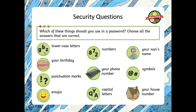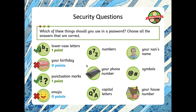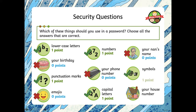Should you use lowercase letters? Yes, you should. Should you use your birthday? No. Should you use punctuation marks? Yes. Should you use emojis? No — not all phones have emojis, and not all password keyboards have emoji access, so there's no point putting an emoji in. Numbers? Yes. Your phone number? No. Capital letters? Yes. Your nan's name? No — someone knows your nan's name, they can access your account. Symbols? Yes. Your house number? No — no points there.